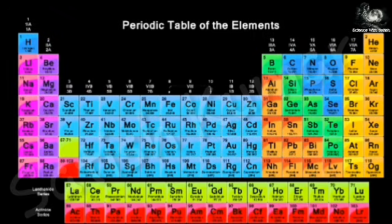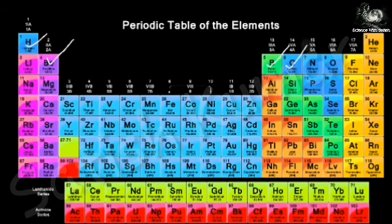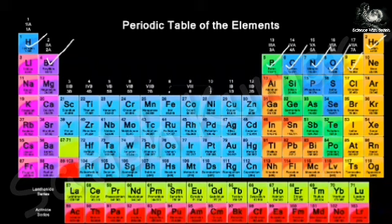Group 1A is called alkali metals. Group 2A is called the alkaline earth metals. The subsequent groups are called the carbon family, nitrogen family, and oxygen family — the oxygen family is also called chalcogens. Group 7A is called halogens, and group 8A (the 18th group or 0 group) contains the noble gases or inert gases. This is the basic structure of the modern periodic table.